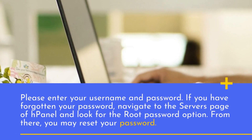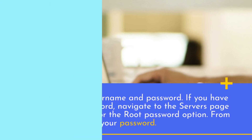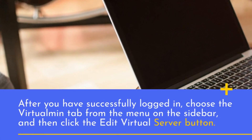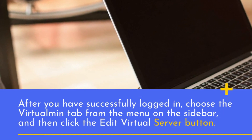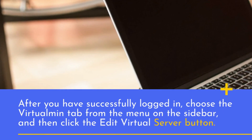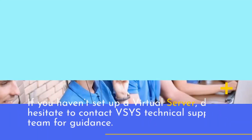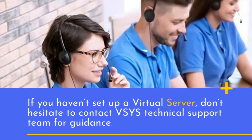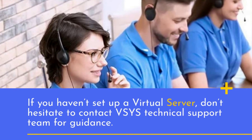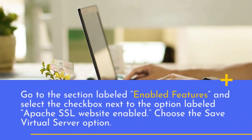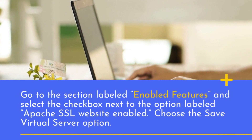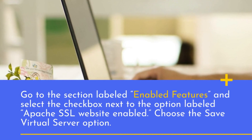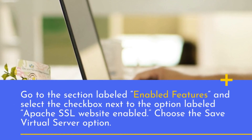From there, you may reset your password. After you have successfully logged in, choose the Virtualmin tab from the menu on the sidebar, and then click the Edit Virtual Server button. If you haven't set up a virtual server, don't hesitate to contact the Sys Technical Support Team for guidance. Go to the section labeled Enabled Features and select the checkbox next to the option labeled Apache SSL Website Enabled. Choose the Save Virtual Server option.